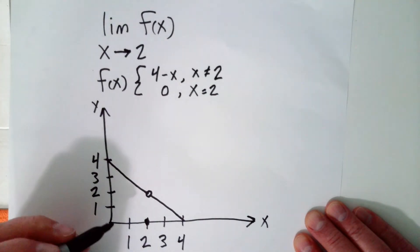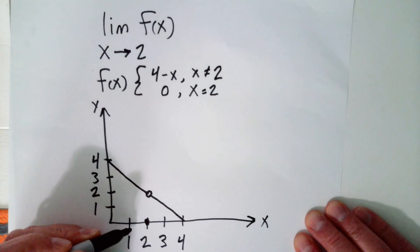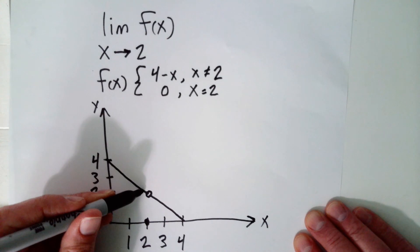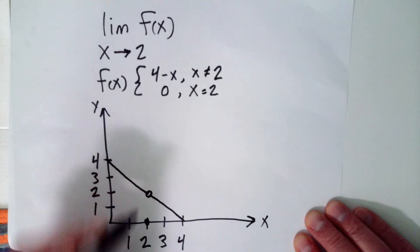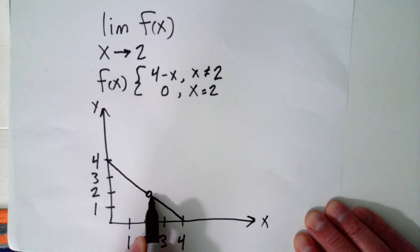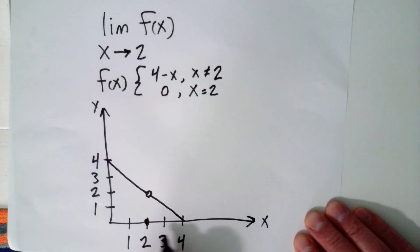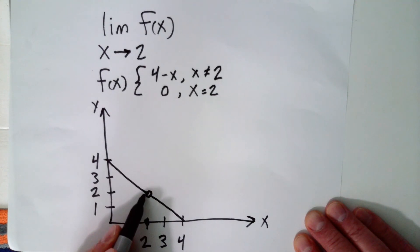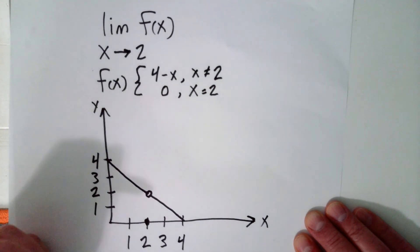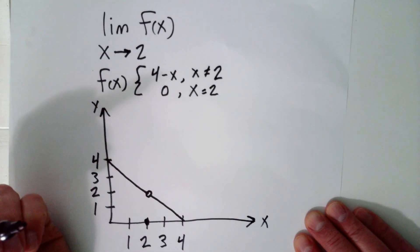Let's evaluate the limit. We look at what is the value of the function when x gets closer and closer to 2 — not at 2, but very close to 2. Very close to 2, the function's value looks like it's close to 2. As we approach 2 from this side, the value of the function also looks close to 2. So from both the left and the right, as we approach the limiting value of 2, the function is also approaching the value of 2. The limit exists, and it's 2.